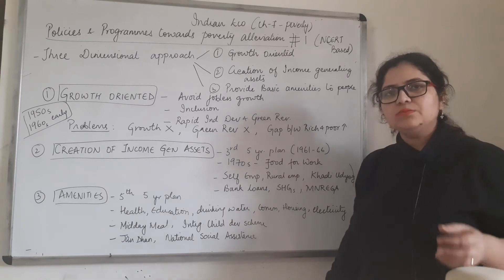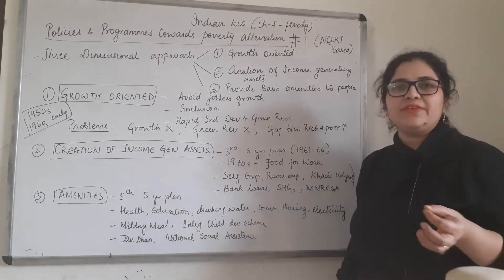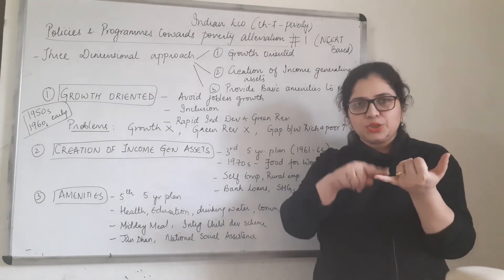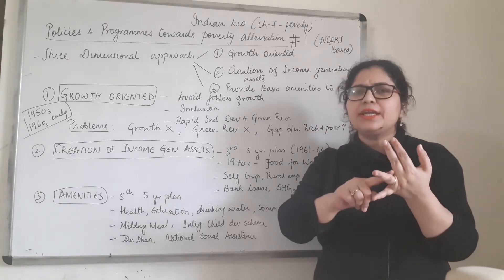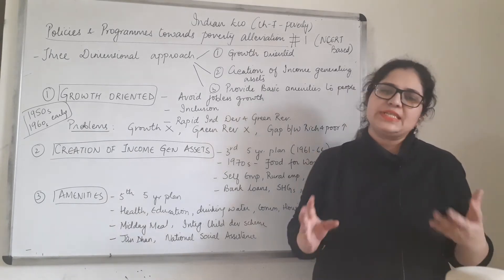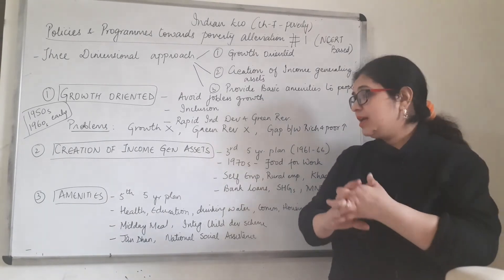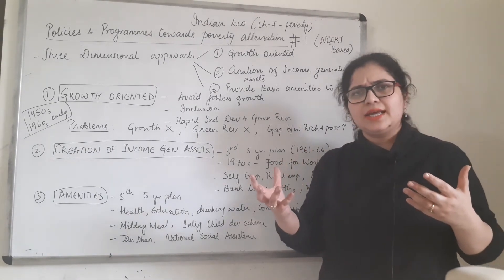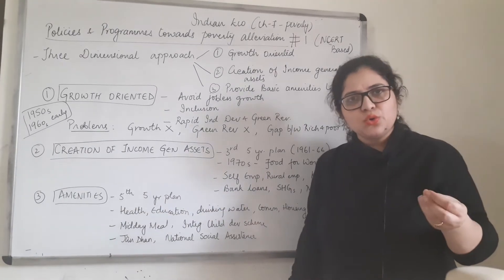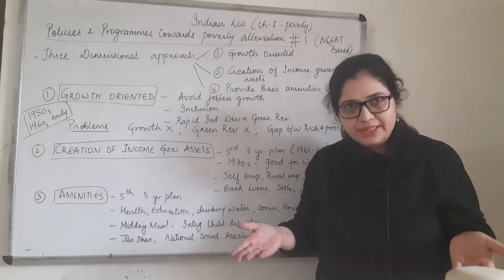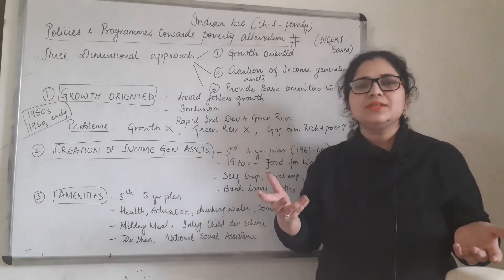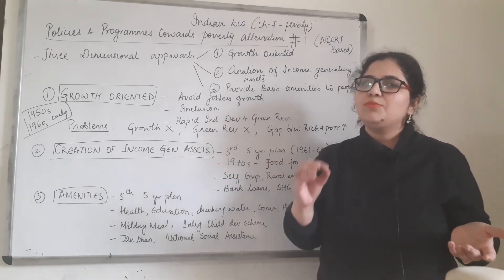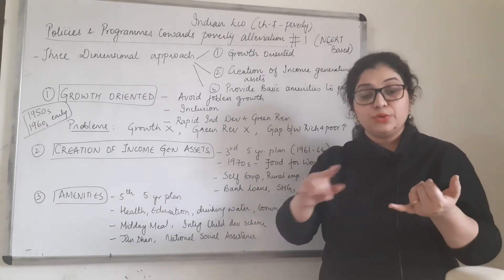Finally, provision of amenities — facilities. This is from the fifth five-year plan onwards. The basic facilities include health, education, housing, communication, electricity, drinking water, and sanitation. Everyone has tried to ensure people get these facilities. The mid-day meal scheme in primary schools is an example — children have the right to education at the primary level, so free education is given. But children drop out because they have nothing to eat. So the government introduced mid-day meals.